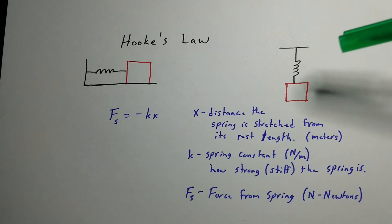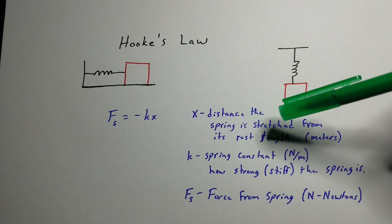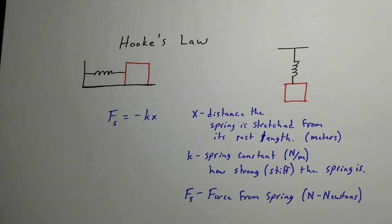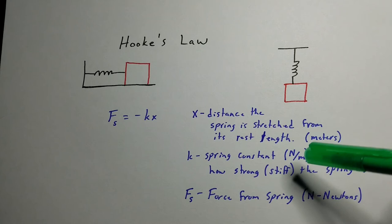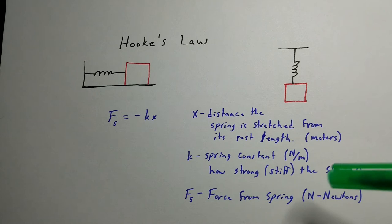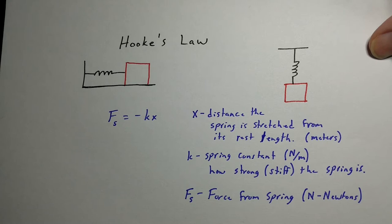So a couple definitions here. x is the distance we either stretch or compress the spring from its rest length. k is the spring constant. That is different for each spring and that's actually how you order a spring is by the stiffness, in other words, strength of the spring. And F is the force on the spring or from the spring itself in newtons.